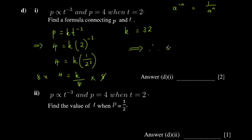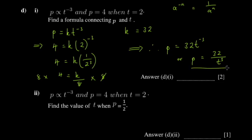We recall our formula to write: therefore p = 32 times t to the power negative 3. If you prefer, you can write it as p = 32 over t cubed - it's still the same expression. Remember to put it in your answer box.